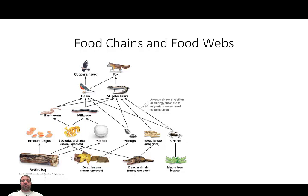These arrows are showing the direction of energy. Energy is being broken down by things like bracket funguses, bacteria, archaea, and other types of funguses labeled here as puffballs. The log itself — the energy in that log, the carbon, the nitrogen, the phosphorus — along with any leftover carbohydrates are being broken down and re-utilized as energy for these organisms.